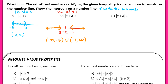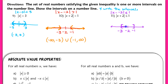For example 11, the absolute value of x plus 2 is less than or equal to 1 means the distance between x and negative 2 is no more than 1 unit away. We draw negative 2 on the number line and go 1 unit in both directions. Since it's less than or equal to 1, we use a closed interval from negative 3 to negative 1.